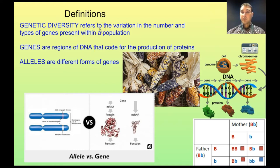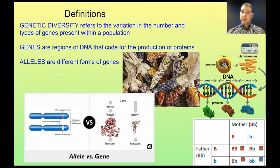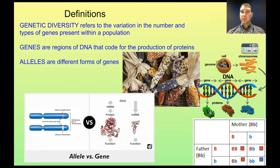Genetic diversity refers to the variation in the number and types of genes present within a population. If a species is highly genetically diverse, there's a large number of genes spread across its population. A gene is a section of DNA that codes for the production of a protein or a gene product. In our cells we have a nucleus if you're a eukaryotic organism, and those chromosomes are made up of long stretches of DNA. Sections of DNA that code for a particular protein are called a gene.